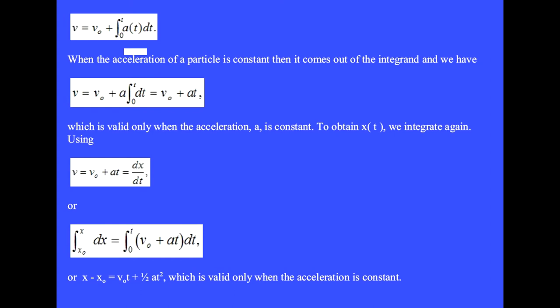When the acceleration of a particle is constant, then it comes out of the integral, and we have v equals v zero plus a times the integral of dt, which gives v zero plus at, which is valid only when the acceleration a is constant.